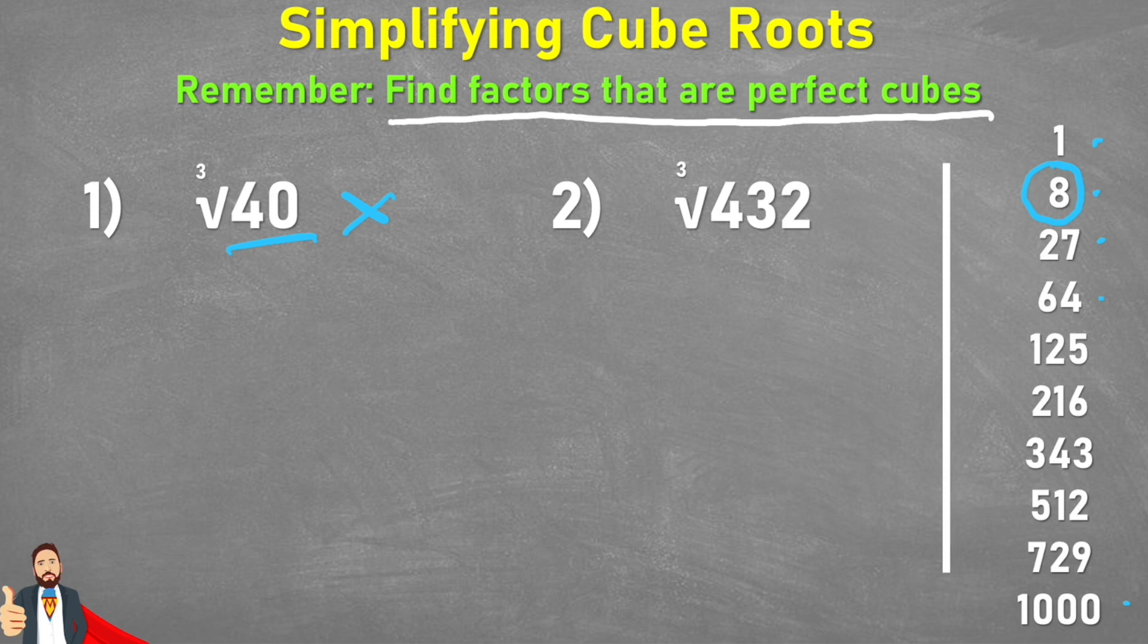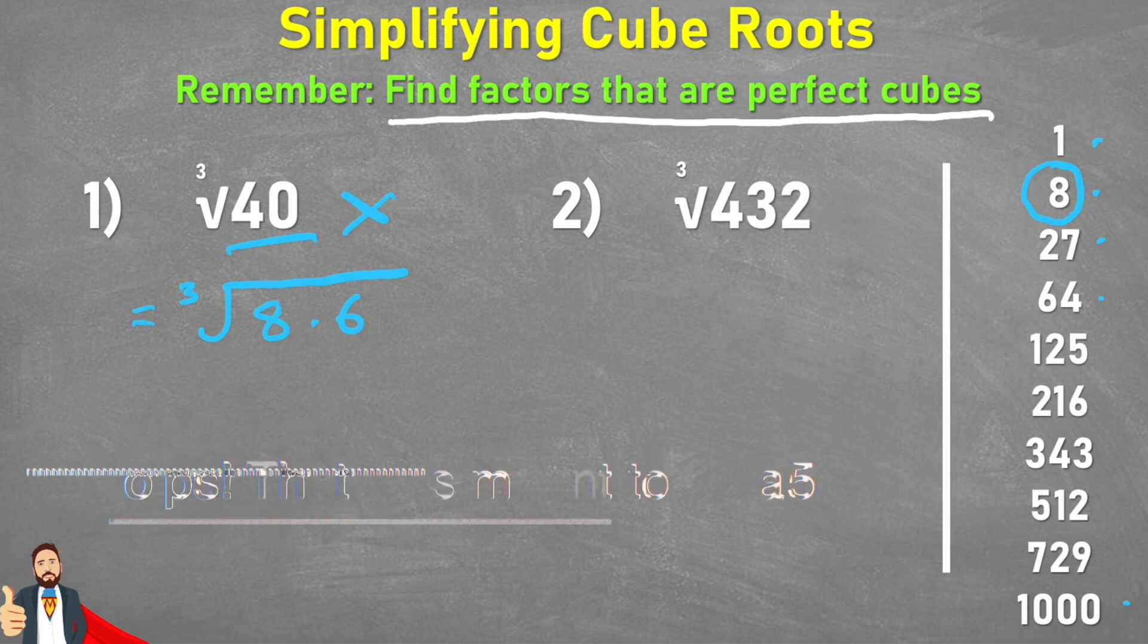And therefore 8 is a factor of 40. Now we can rewrite our expression here to say that it is equal to the cube root of 8 multiplied by 6. And thanks to the multiplication or product property of cube roots,